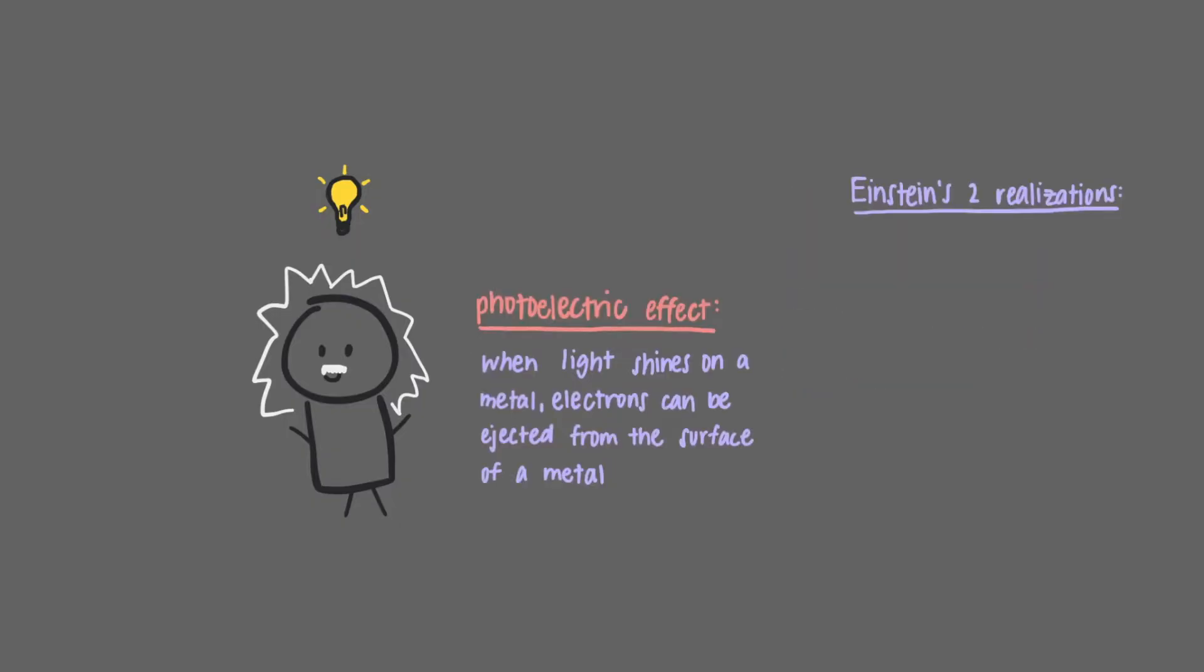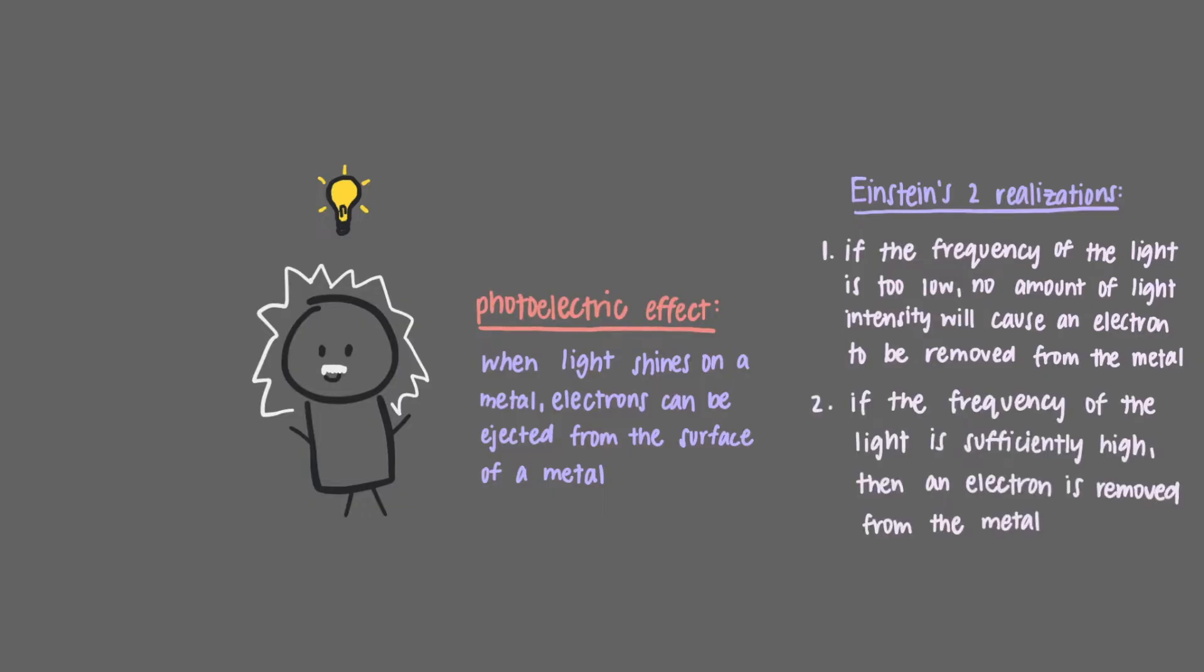Einstein realized two things when studying this phenomenon. First, if the frequency of the light is too low, no amount of light intensity will cause an electron to be removed from the metal. And second, if the frequency of the light is sufficiently high, then an electron is removed from the metal. Ionization.